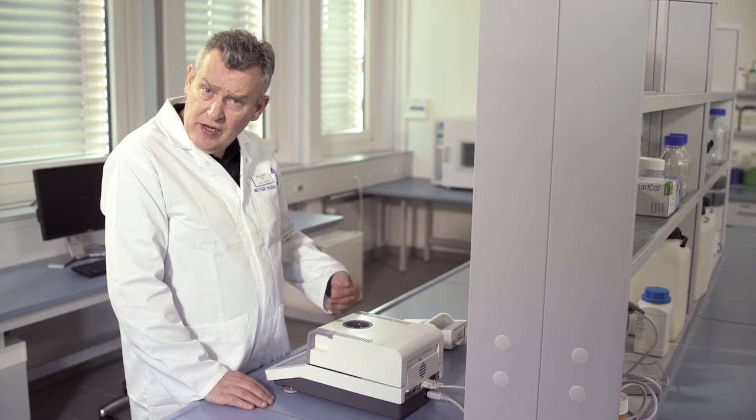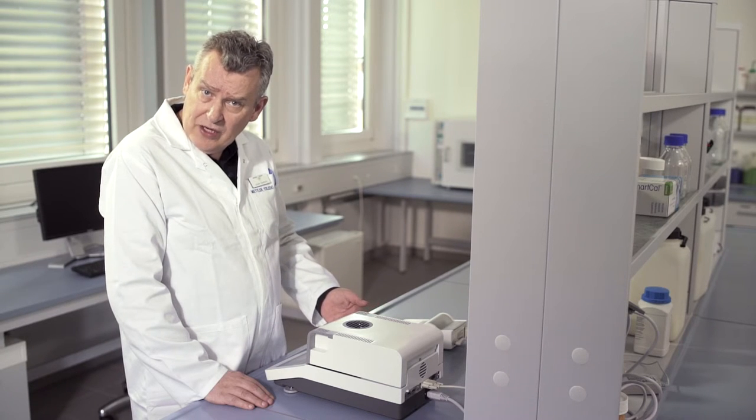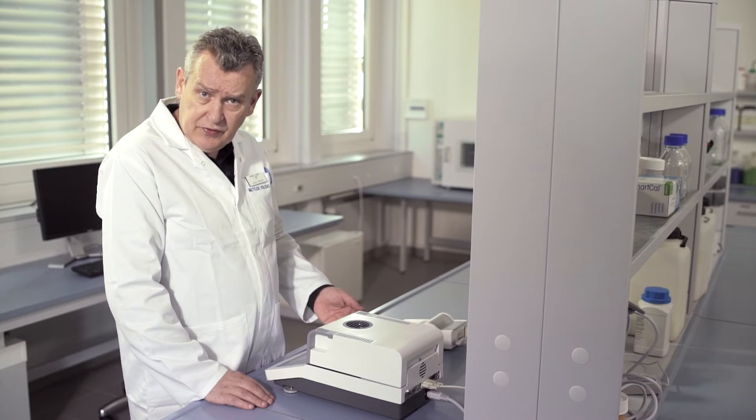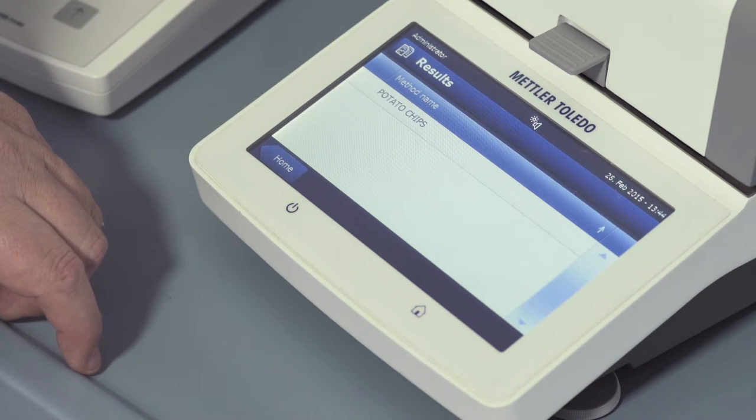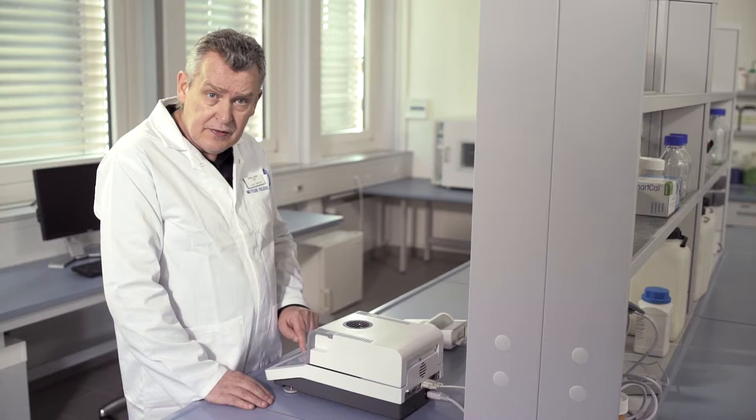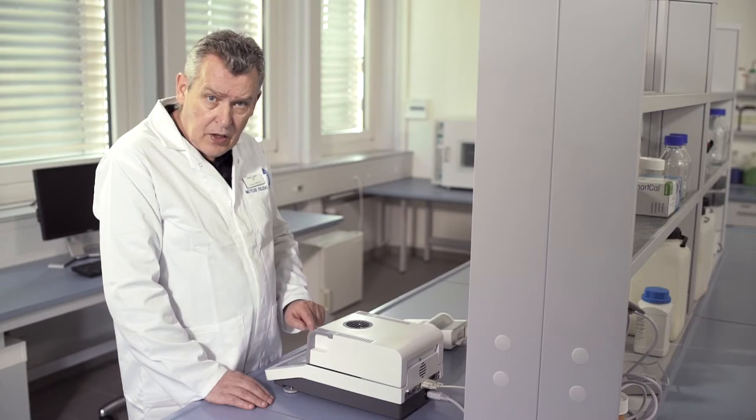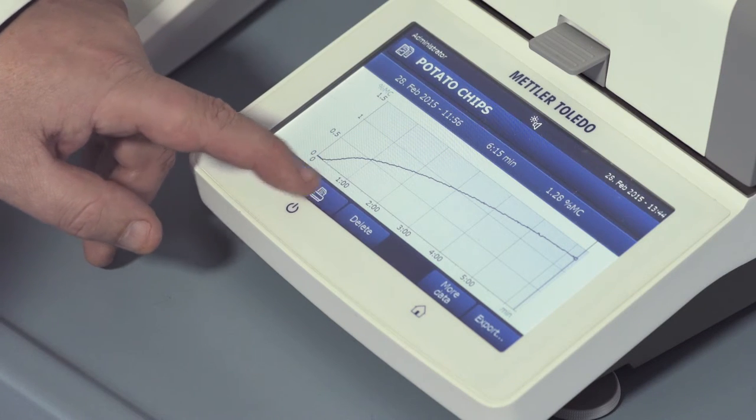If you want to print a result, you can either define automatic print after the measurement, or you can even print an old measurement result by navigating to results, select the method or sample of interest, and then the actual result. Now press the print icon, and the result will be printed.